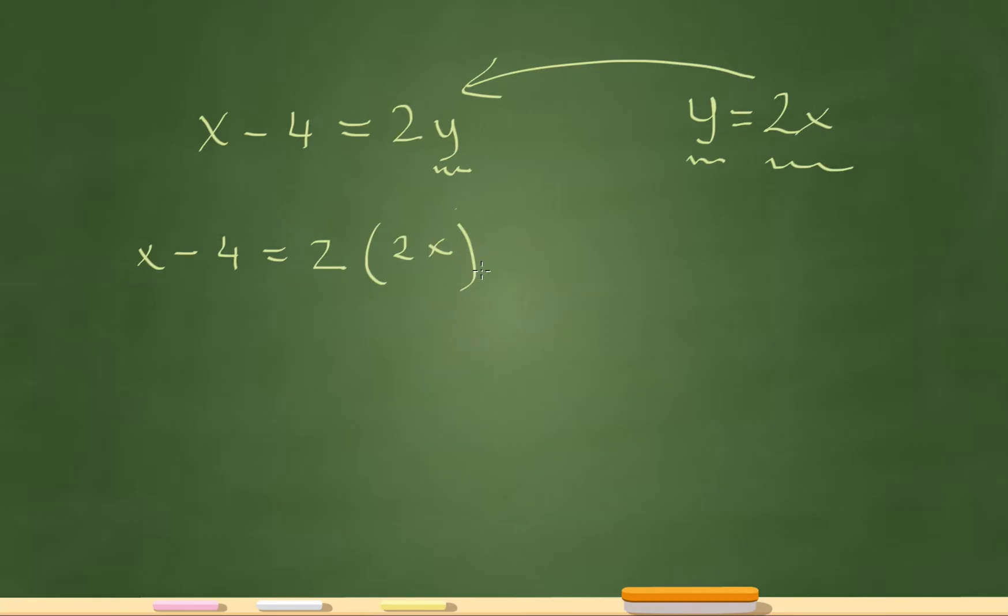And then see now I have x and x over here so I should be able to solve for it because I just have a single variable. So x minus 4 will equal 4x, 2 times 2x.